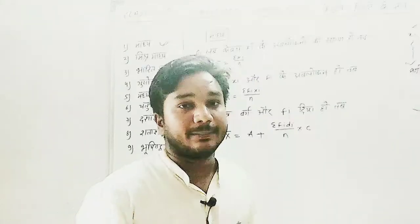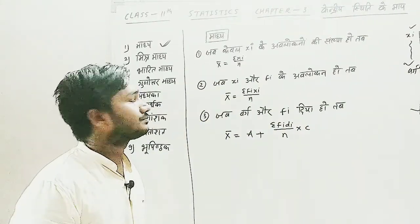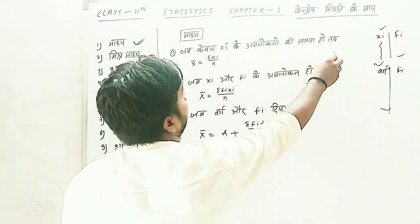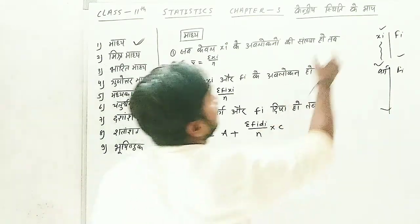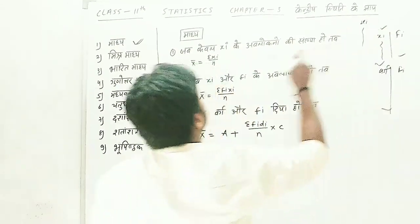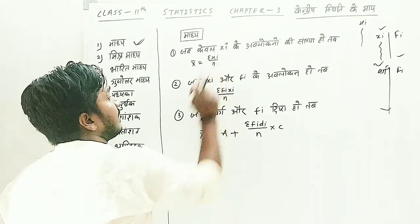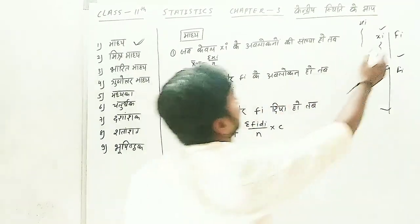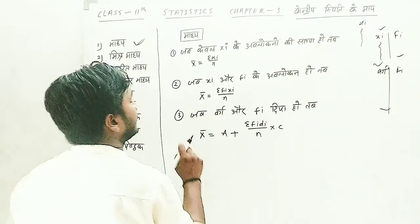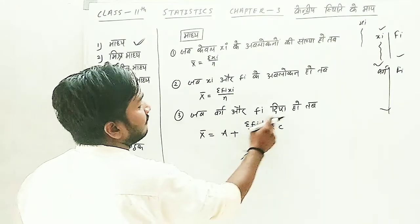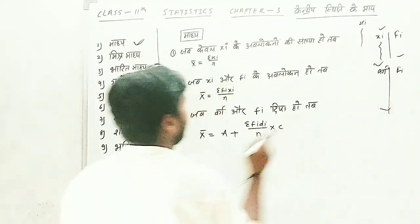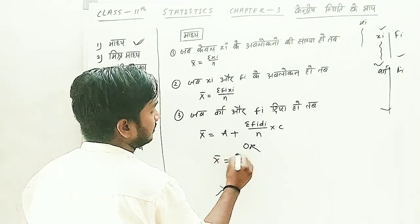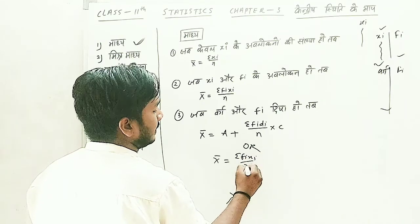The first case: when only Xi observations are given, then the formula is X̄ = ΣXi ÷ n. The second case: when both Xi and Fi are given, then you use the formula X̄ = ΣFiXi ÷ n. The third case: when work and Fi are given, then there is also another formula — ΣFiXi ÷ n — and one more formula as well.